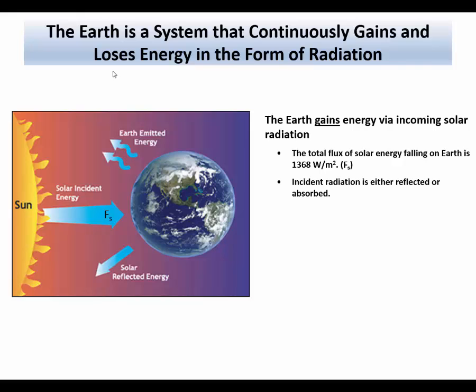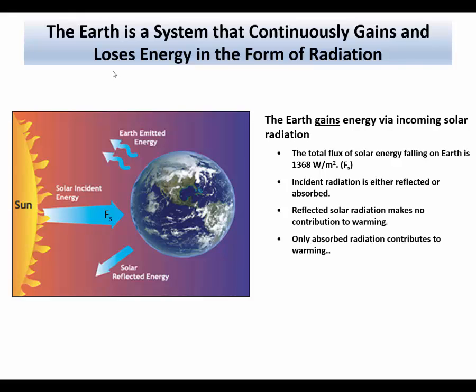The radiation falling on the Earth is either reflected or absorbed. We'll talk about this in more detail in an upcoming slide, but that portion of the incoming solar radiation which is reflected makes no contribution to warming. That radiation which is absorbed contributes to warming and causes the Earth to develop some temperature.